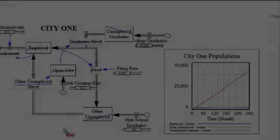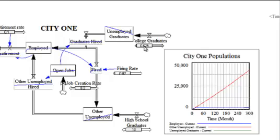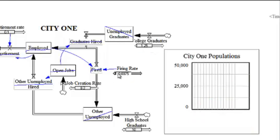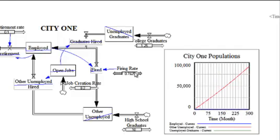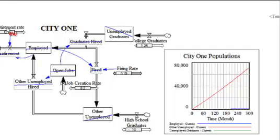Congratulations! You now have a model. A certain percentage of the unemployed graduates move into the employed pool at each given step. Then, a certain percentage of the total employed plus the new high school graduates move into the other unemployed, which then have a certain percentage of the total unemployed for that category moved into the employed.